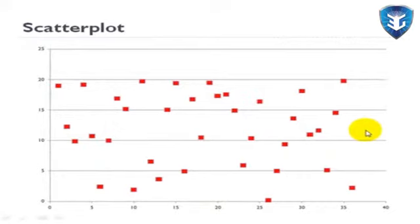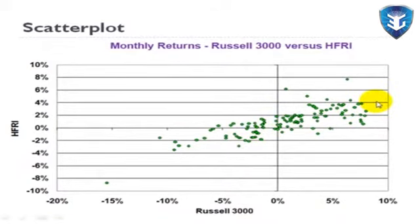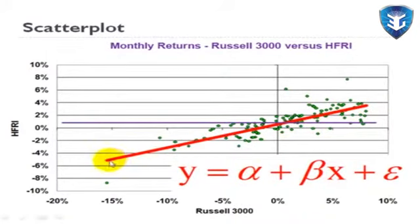A quick look at the scatter plot may also tell us there is no relationship at all. With actual data — for example, hedge fund returns from the HFRI index regressed against returns from the Russell 3000 as a proxy for the overall market — the scatter plot suggests a linear relationship, making linear regression appropriate. The regression draws a best-fit line through the data.